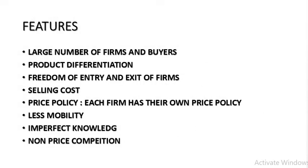Features of monopolistic competition: large number of firms and buyers; product differentiation is the basic feature; freedom of entry and exit of firms. However, buyers do not have proper knowledge regarding market conditions, so sellers have to incur selling cost. Each firm has their own price policy and there is less mobility of the factors of production. Buyers and sellers have imperfect knowledge. The basic feature is also non-price competition — firms don't compete on price basis; they don't reduce the price. For example, surf may offer 50 grams or 100 grams more at the same price, or give free items with the products.